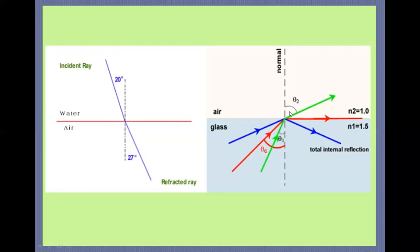The light, instead of going into the air medium, is reflected back into the same medium. It is called reflection because it also obeys the laws of reflection. Looking at only the blue arrows: the first law states that the incident ray, the normal, and the reflected ray all lie in the same plane. The second law states that the angle of incidence must equal the angle of reflection — both are equal. So always remember, in TIR the light rays also obey the laws of reflection.